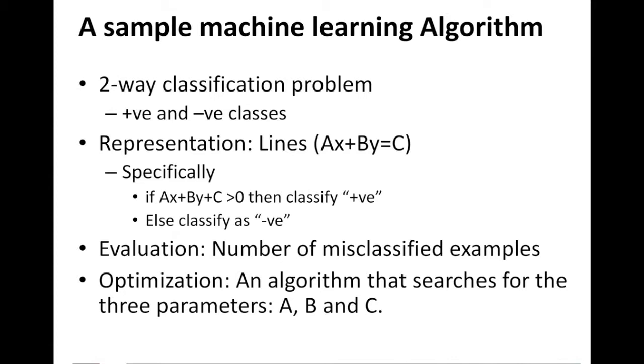Evaluation: number of misclassified examples. That sounds reasonable, right? So if you have lots of misclassified examples, your algorithm is performing poorly. If it has fewer, then it's better. If it has none, then awesome, great. Now for the optimization part: so we have discussed representation, evaluation. Now the optimization - you want to find the line that separates these two sets of points the best. You want to find the best line.